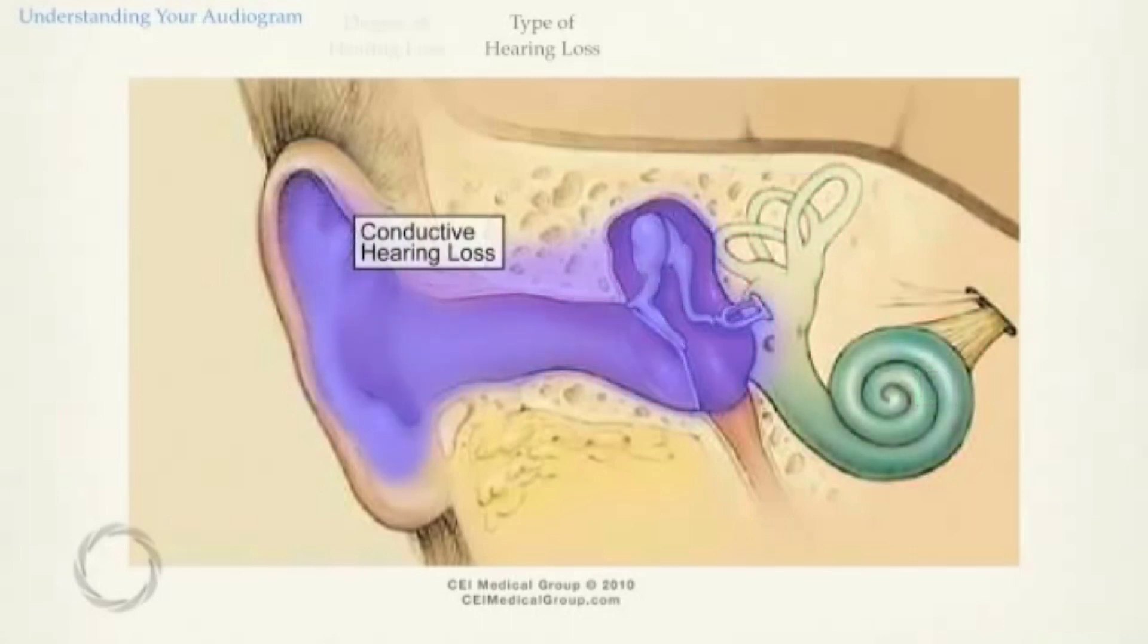A conductive hearing loss occurs when there has been damage to the outer or the middle ear. Conductive hearing loss is a bit like wearing earplugs. Your inner ear is working perfectly, but sound cannot get into the inner ear to be transmitted to the brain.